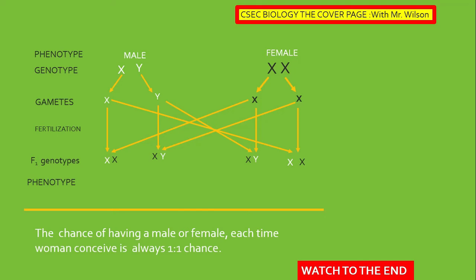Now you will see from the results that we have XX, which is the genotype, XY, XY, and XX. Remember, the naming convention always places the X in front of a Y. Can you determine the phenotype of the offspring? Female, male, male. You see from the results that each time a woman conceives, the chance of having a male or female is always going to be 50-50, one-to-one, or half and half.